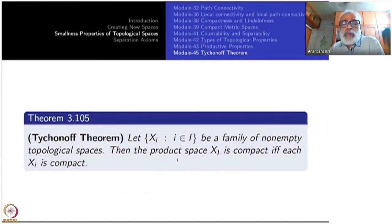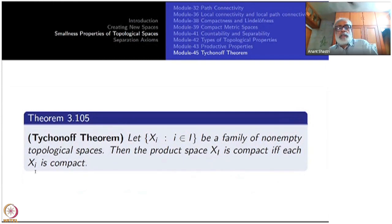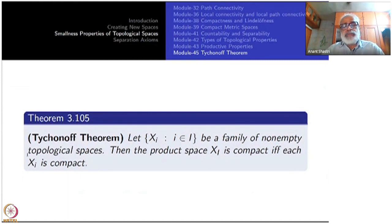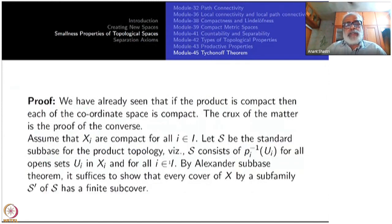What we have seen is that if the product space is compact, each factor space is compact. For this you use that the Xi's are non-empty, so the projection maps are surjective. A surjective continuous function takes compact sets to compact sets — that is an easy theorem. Using that, it follows that if the product space is compact, then each Xi is compact.